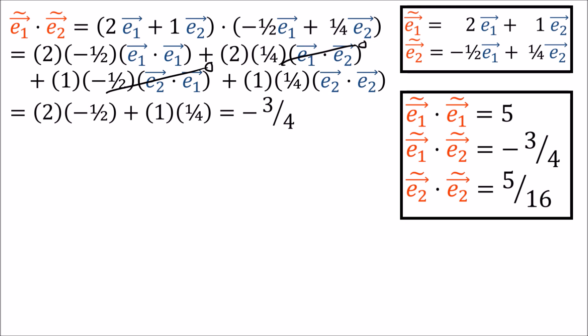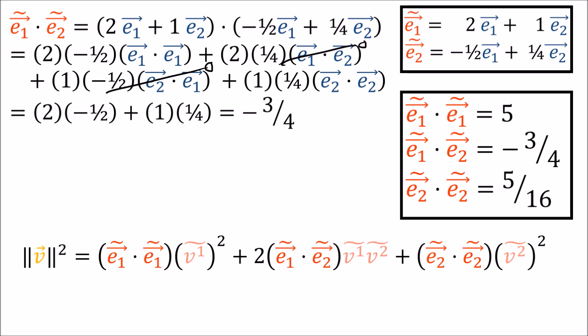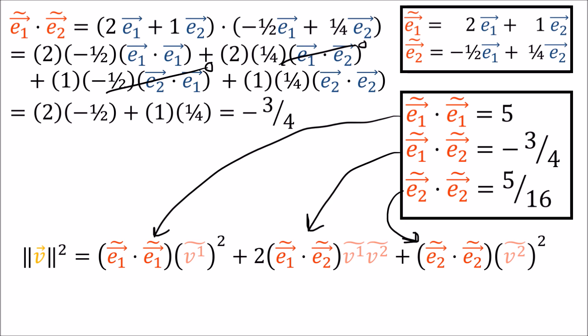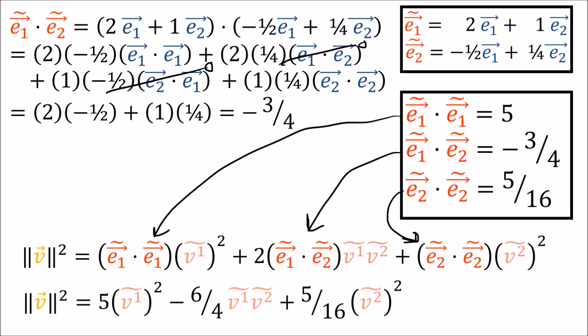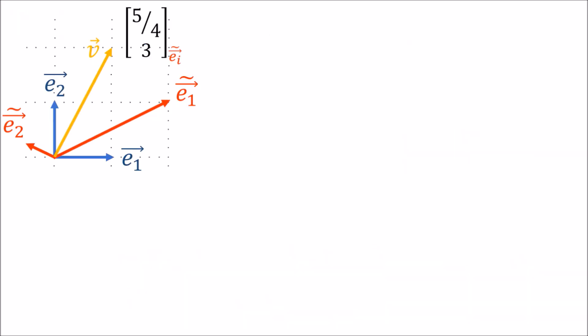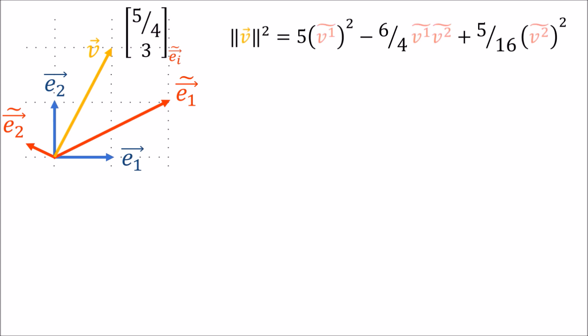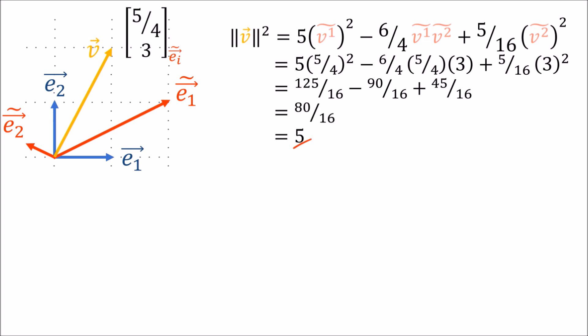We've now computed all three dot products needed for the new basis, so we can plug them into the formula for the squared vector length. Plugging in the components of v in the new basis and churning through the math, we see that we get 5. So the length of v is the square root of 5, which is the answer we were expecting.